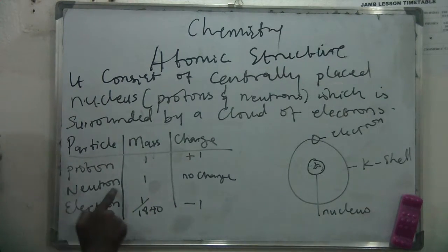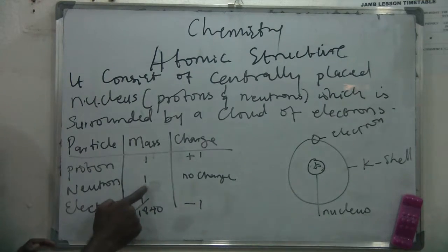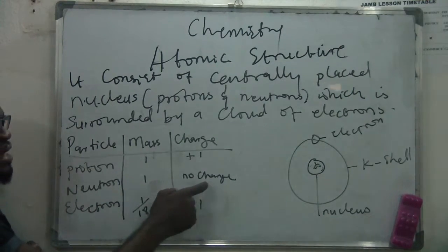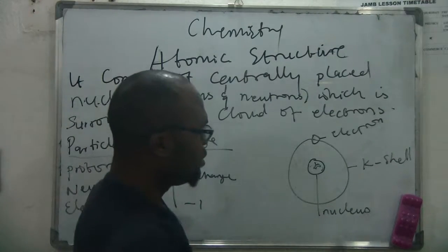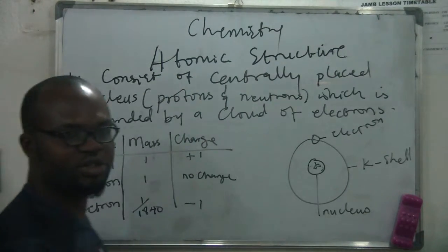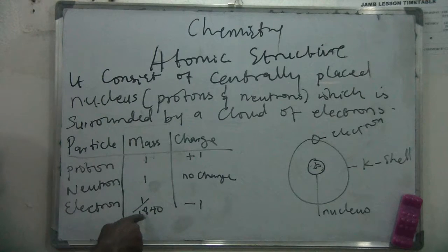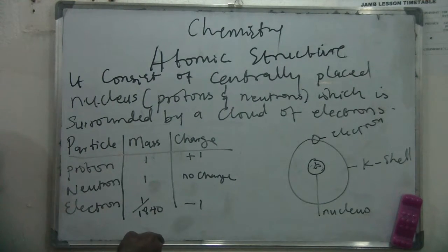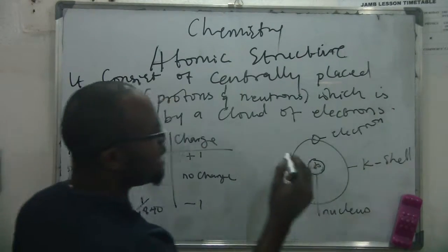Secondly, it must have a neutron. The neutron has a mass of one and a charge of no charge. The neutron is also inside the nucleus. Then you have the electron, having a mass of one over 1840 and a charge of minus one.